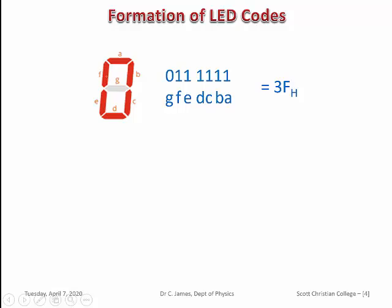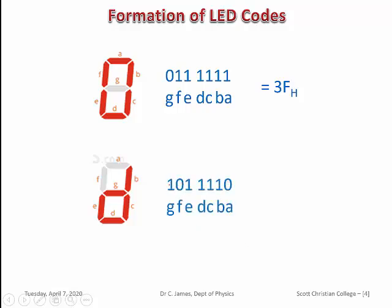Similarly, let us see one character — the letter D. For D, except A and F, all other diodes are energized. The binary equivalent gives the hex code 5E. So if we send out 5E from the microprocessor, the character D will be displayed on the LED. These are the LED codes. Converting these codes in software is not easy and is normally difficult to program.